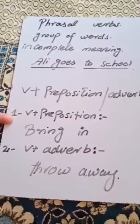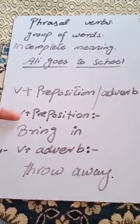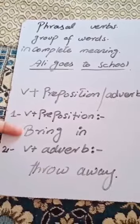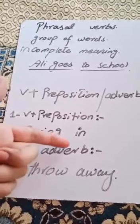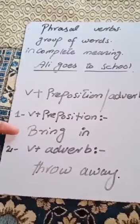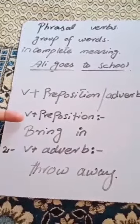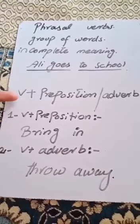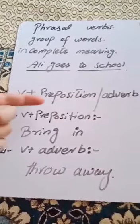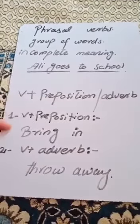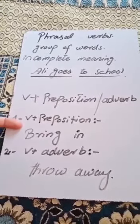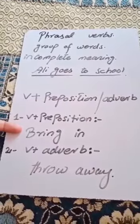Here is an example of verb plus preposition to make a phrasal verb. 'Bring' is a verb and 'in' is a preposition. So with the combination of verb plus preposition, we can make a new phrasal verb — for example, 'bring in' or 'bring down.'